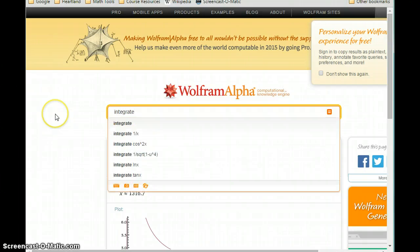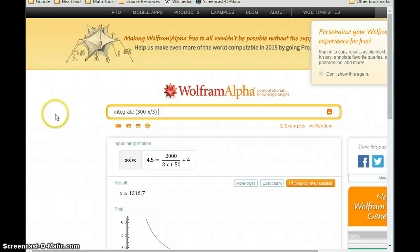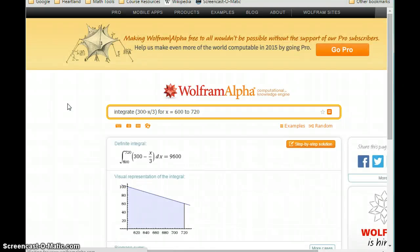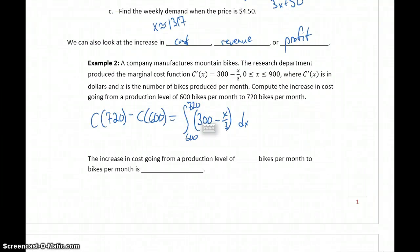So we can integrate 300 minus x over 3 for x equals 600 to 720. So replacing this with any other function, the lower and upper bound for our integral will allow us to evaluate that definite integral. In this case, it gives us a result of 9,600. So we can say the increase in cost going from a production level of 600 bikes up to 720 bikes, that increase in cost will be $9,600, which again we get from evaluating that definite integral.